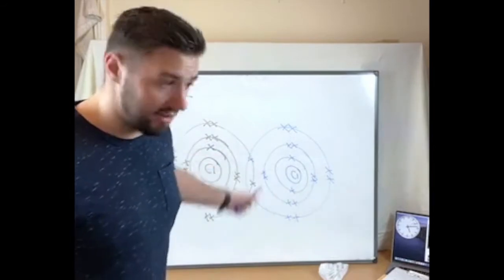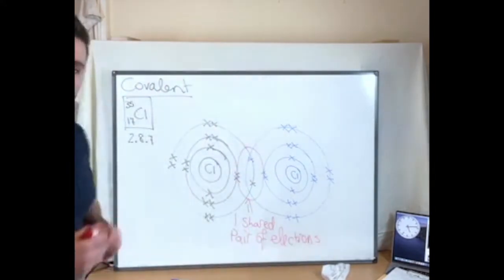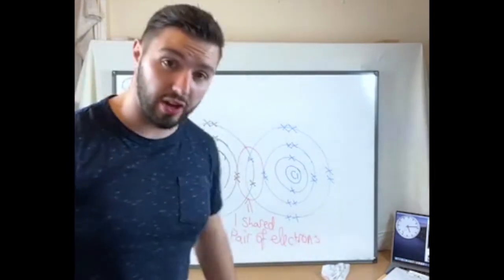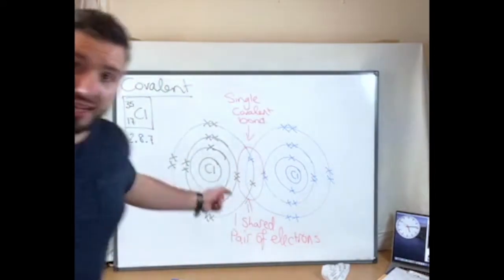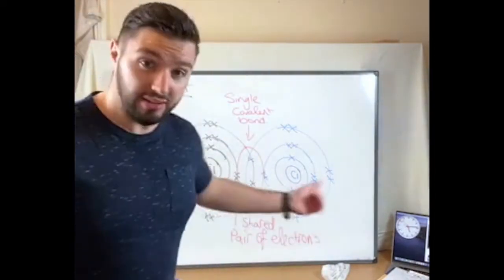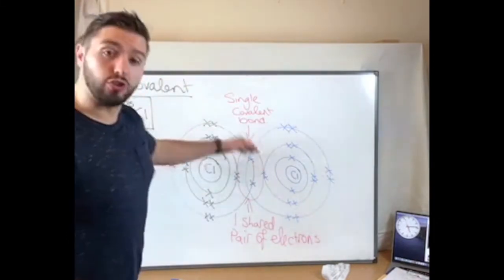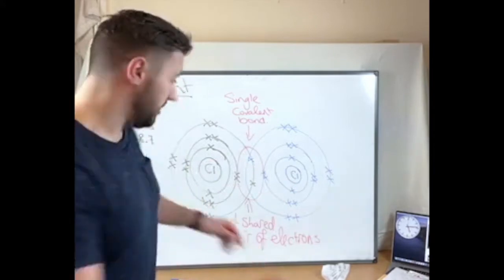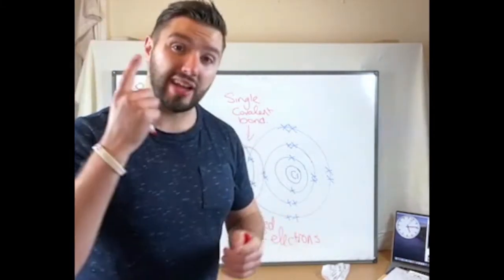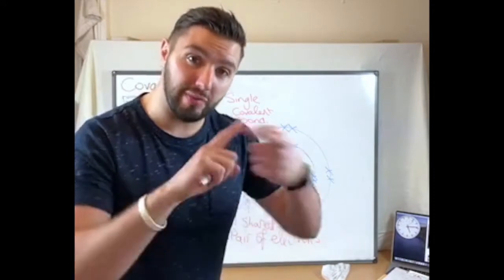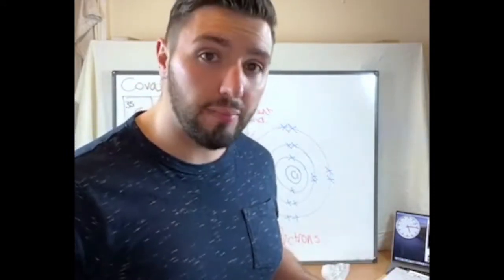So that's kind of the basics of it. Now this part here has got one shared pair of electrons, one from each side - we call that a single covalent bond. Basically one electron from each side, easy-peasy. There are scenarios where we have two or three sharing, we'll come to that in a second. But in every single one of these covalent bonds you are looking at at least one electron from each side. You have to have one electron from each side, otherwise it's not a covalent bond.